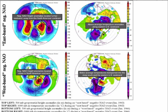Typically, with a negative NAO pattern, especially a west-base one, you end up with a powerful ridge building over portions of Alaska, a trough around the Aleutian Islands, and a bit of a split pattern with the subtropical jet stream. This also corresponds to very cold temperatures driving into not only the central United States and the southern plains, but also the eastern United States. This type of weather pattern — a west-base negative NAO weather pattern — is associated with many of our most famous winter storms.